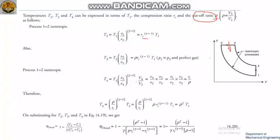Here V3/V2 is the cut-off ratio ρ, so T3 equals ρ times T2. Substituting the earlier expression for T2, we get T3 equals ρ times RC^(γ−1) times T1. From process 3 to 4, the formula gives T4 equals T3 times (V3/V4)^(γ−1).